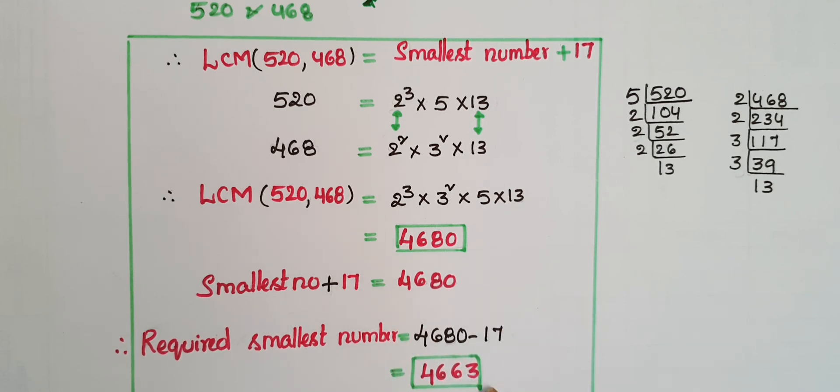So this is the required smallest number. When you increase this number by 17 again, you will get 4680, that is divisible by both numbers 520 and 468.